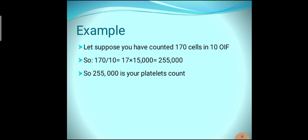For example, suppose we counted 170 platelets in 10 oil immersion fields. We divide 170 by 10 because this is the formula — divide counted cells by 10 — giving us 17. Then we multiply 17 by 15,000. The obtained value is our platelet count: 255,000 per microliter. So 255,000 is our platelet count present in the body.